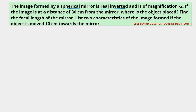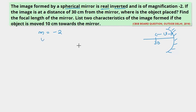Let's first draw the diagram. We have a concave mirror and the image is formed at a distance of 30 cm from the mirror, so image distance v = minus 30 cm. Why minus 30? Because it's a real and inverted image, formed on the same side of the mirror where the object is placed.